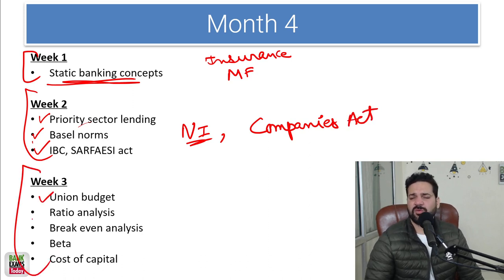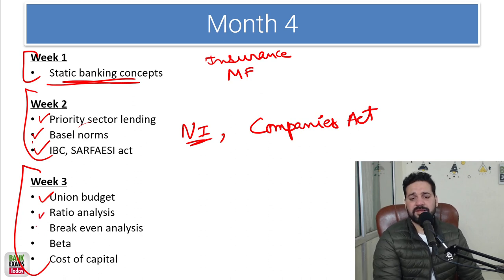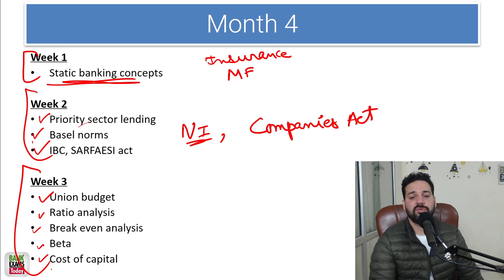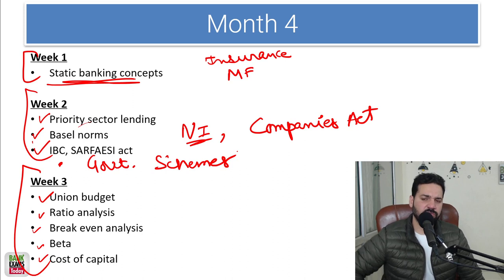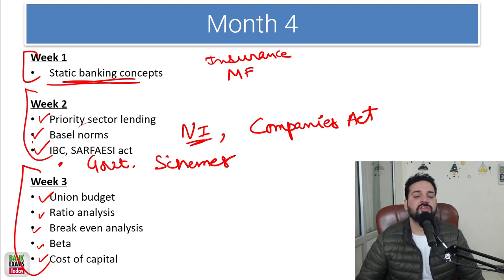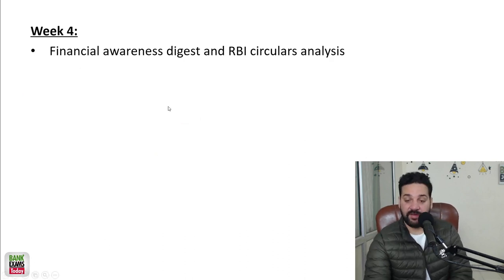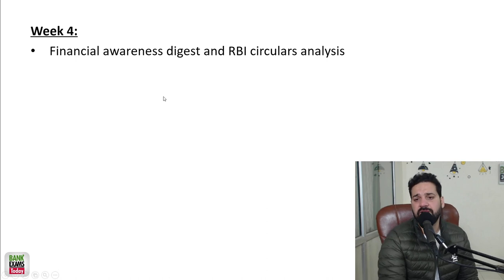In week 3, we cover the union budget — that will be handled within the financial awareness section anyway — plus ratio analysis, break-even analysis, beta, and cost of capital. Government schemes such as Mudra, Jan Dhan Yojana, Kisan Credit Card, and other related schemes will also be covered here. Week 3 is more typical financial management content. In week 4, the financial awareness digest and RBI circulars for that month will again be covered.